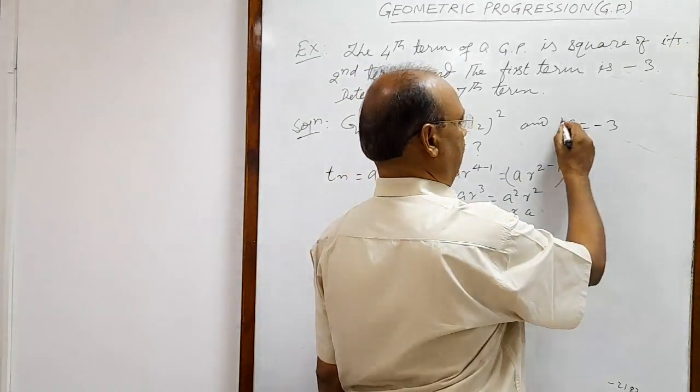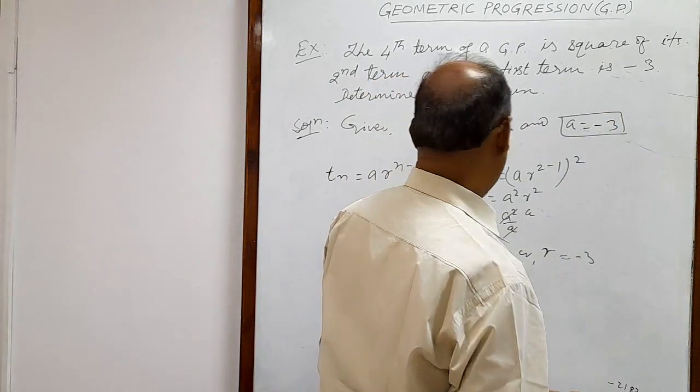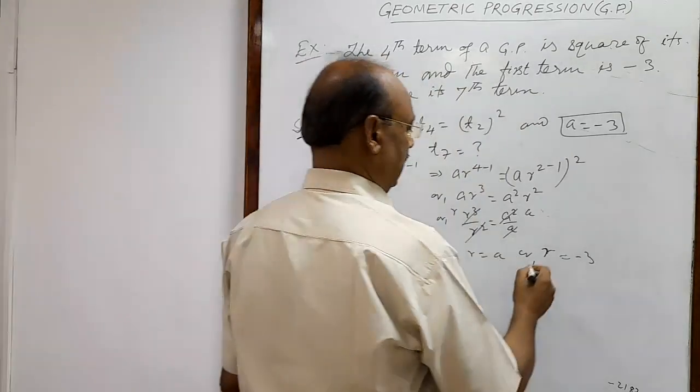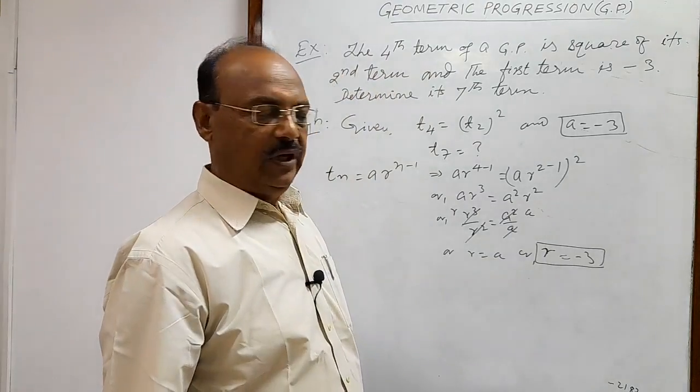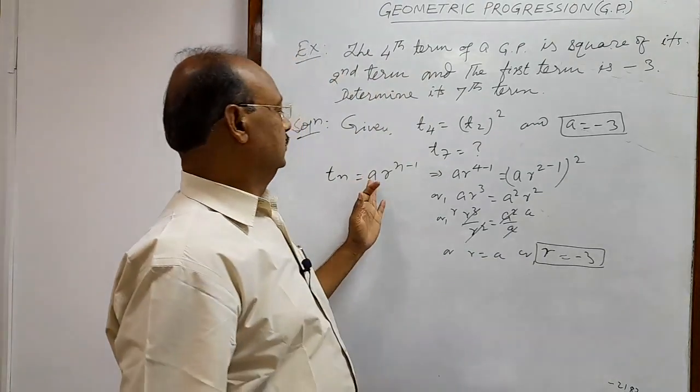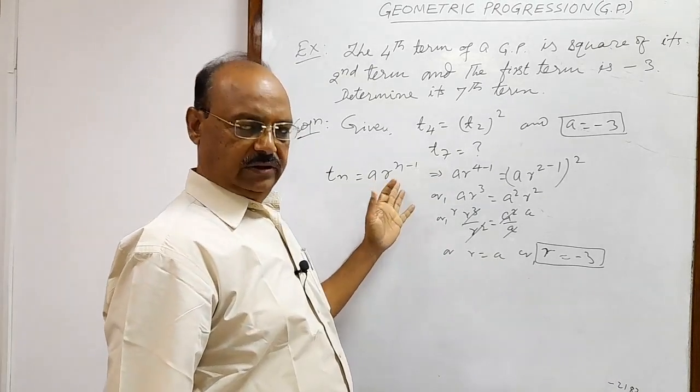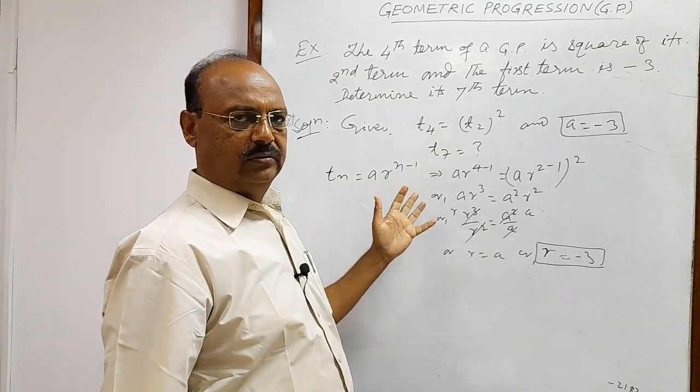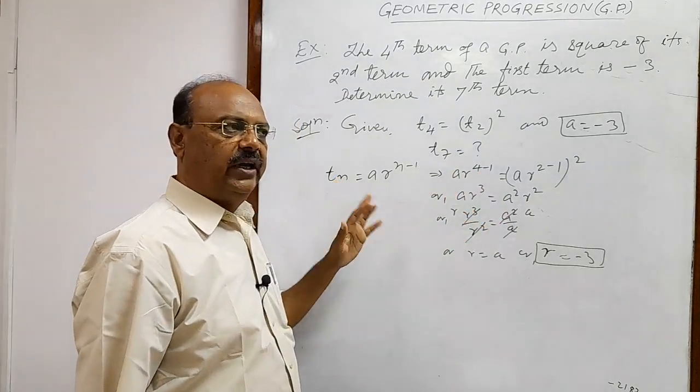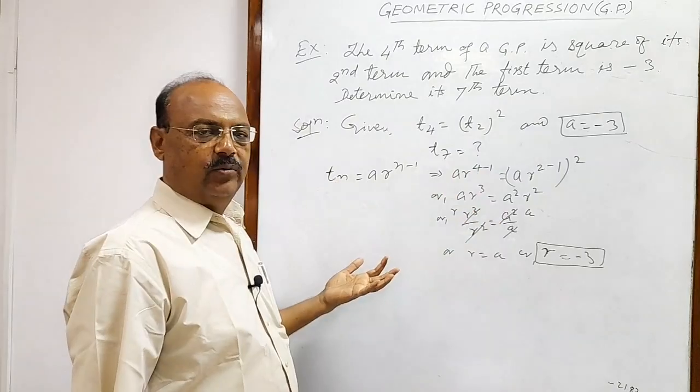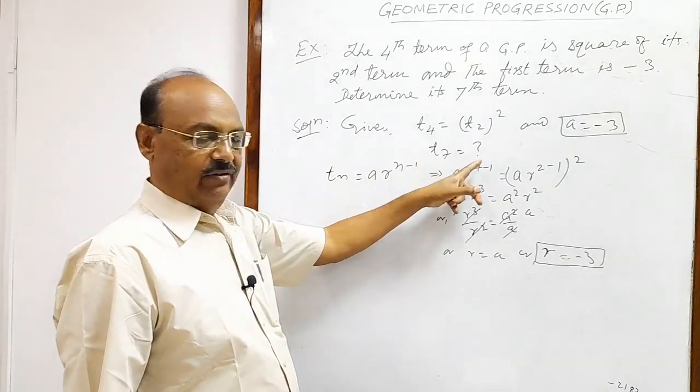So here we are having value of first term A minus 3, as well as value of R, which is also equal to minus 3. Very simple. And if these two quantities A and R are known, we can find out any required term with the help of this general formula. Here we have to find out T7.